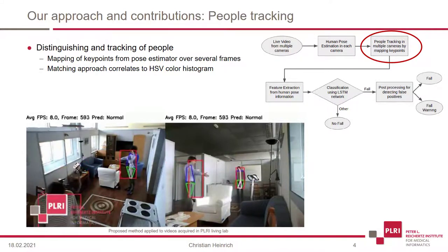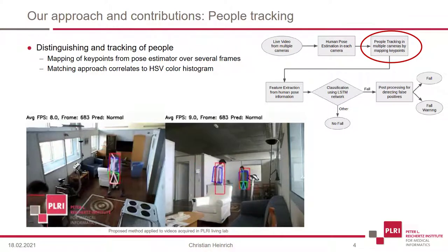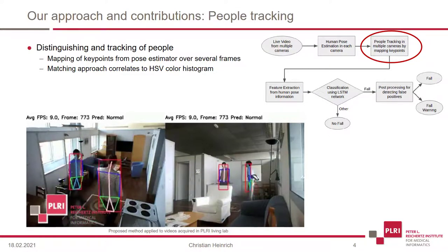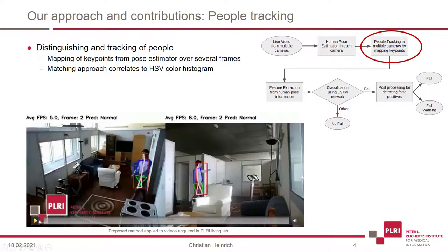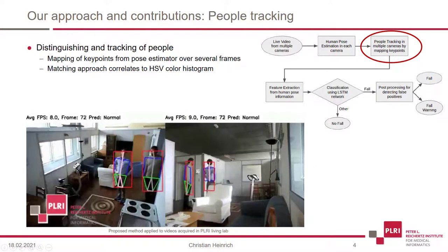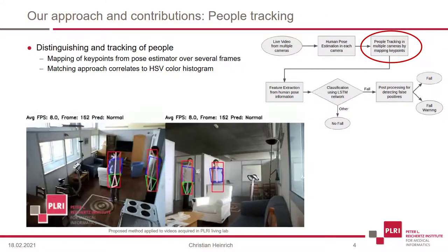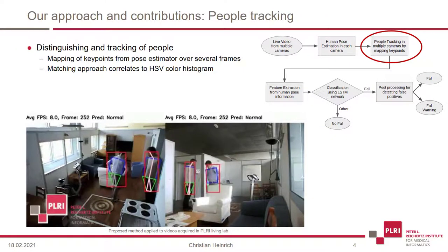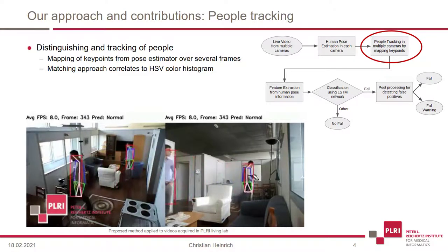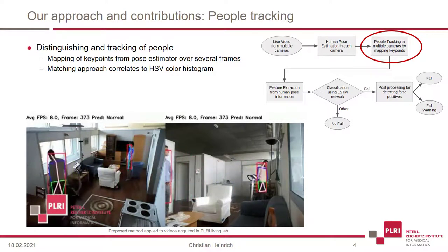Therefore, we try to map the key points using spatial Euclidean distance over several frames as a distance measure. Then, we map one key point set from one camera to the one with higher similarity in another camera to identify one person. This approach correlates to Hue, Saturation, Value — in short, HSV color histograms.